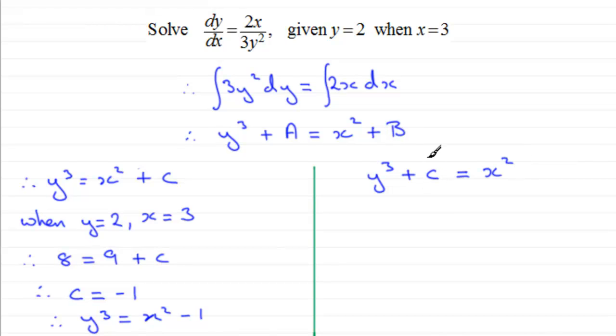The C here is the result of doing A minus B. One constant minus another constant gives us a constant, which I'll call C. And we need to work out what that constant C is. And we would say, again, when y equals two, x equals three. We'd substitute these values into our equation here.